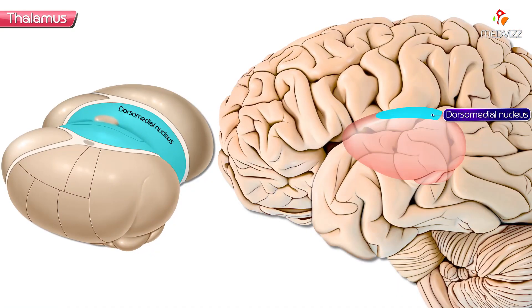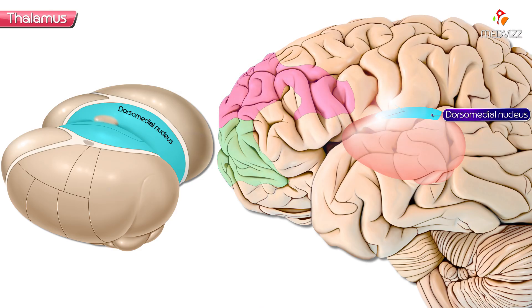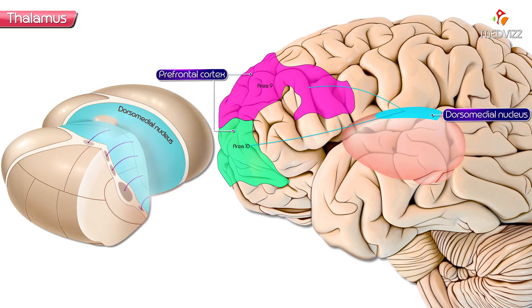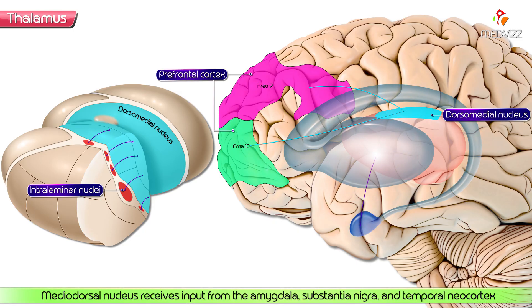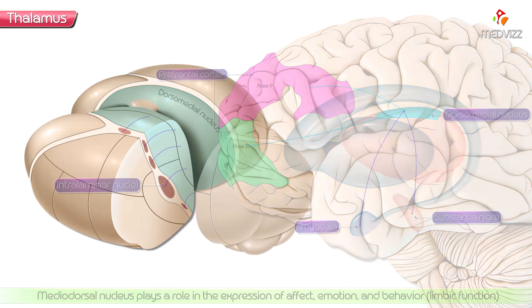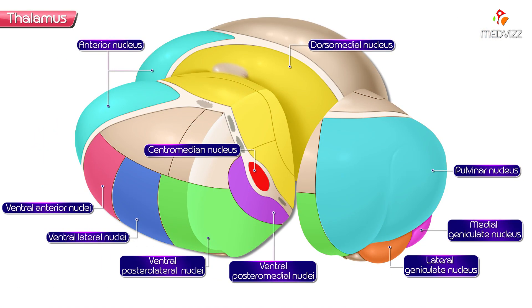Next is the mediodorsal nucleus, also called the dorsomedial nucleus of the thalamus. It is reciprocally connected to the prefrontal cortex and has abundant connections with the intralaminar nuclei. It mainly receives input from the amygdala, substantia nigra, and temporal neocortex. When destroyed, memory loss occurs — this is called Wernicke-Korsakoff syndrome. The mediodorsal nucleus plays an important role in the expression of affect, emotion, and behavior, which is the main function of the limbic system.